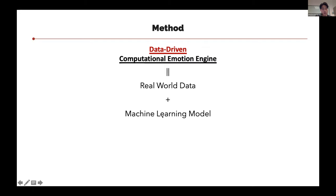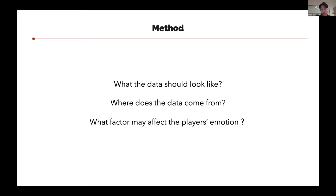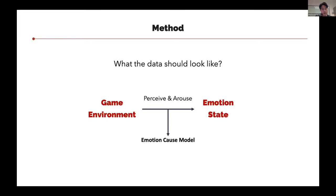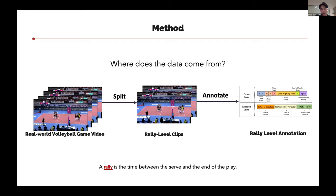Here come several questions: what the data should look like, where the data comes from, and what factors may affect the player's emotion. We need game environment information and corresponding emotion state labels to optimize our emotion cost model. We have collected a set of real-world volleyball game videos, split into rally-level clips. A rally is the time between the serve and the end of play. We then give an annotation for each rally-level clip, annotating a series of game states and emotion labels.